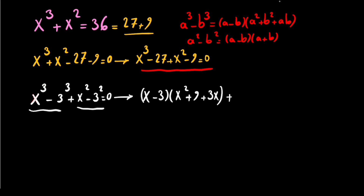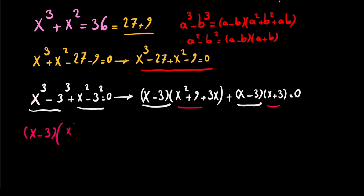For the second part, x squared minus 3 squared is a difference of squares, so we write it as (x minus 3)(x plus 3) equals 0. Now we can see that (x minus 3) is a common factor in both terms.